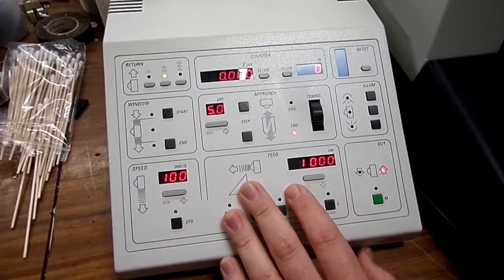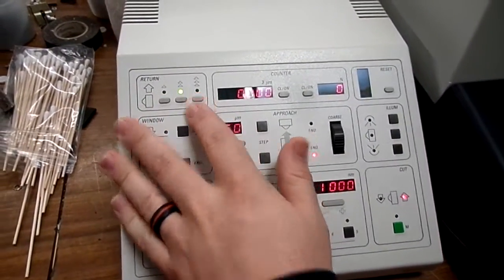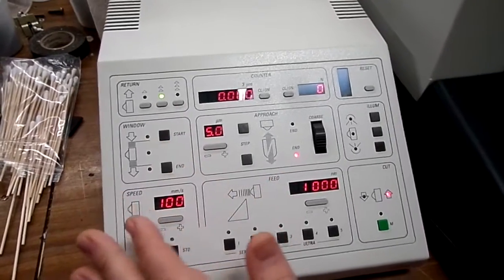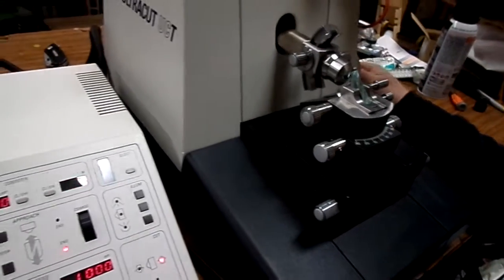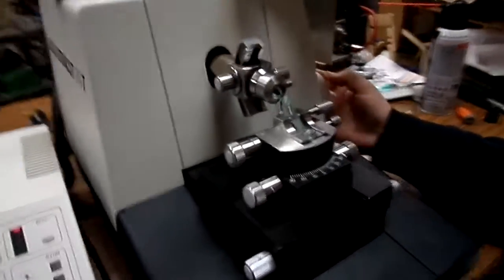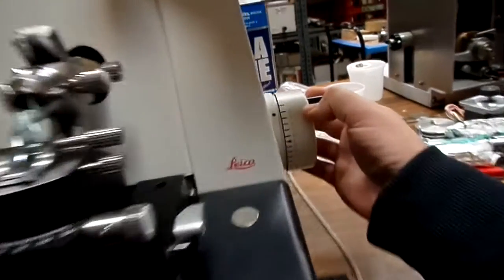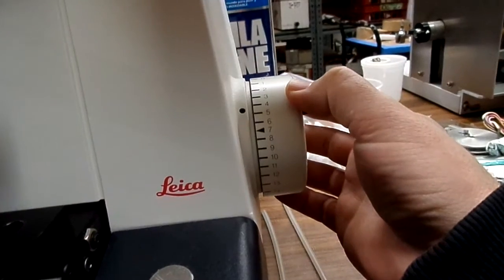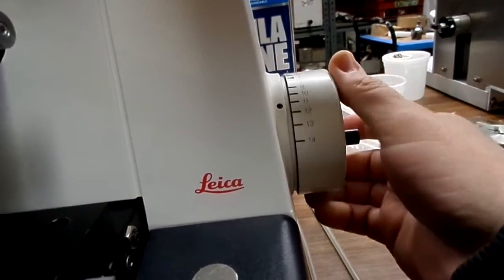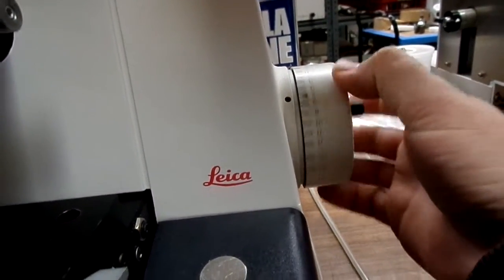Then we have the controls on our controller. You have return speed for when the head is retracting. Cutting window. With the cutting window, if you look on the hand wheel, you'll see different numbers here. And if it's within those numbers, that's where you can set up your cutting window.